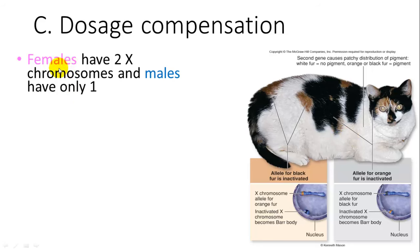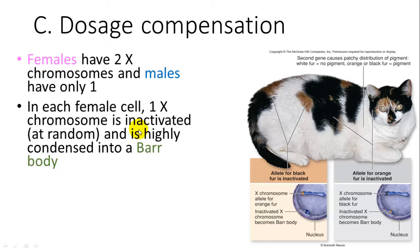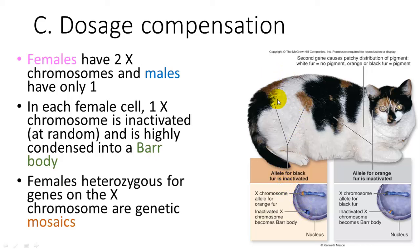Dosage compensation accounts for the fact that females have two X's and males have only one. In each female, one X chromosome is inactivated and highly condensed into a Barr body. This is what gives the calico coloration in cats — some X chromosomes have the allele for black fur and others for orange fur, so the other allele is inactivated in different cells. This means calico cats are mosaics, having differences among their different cells.